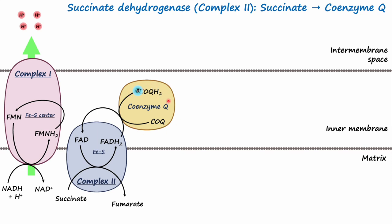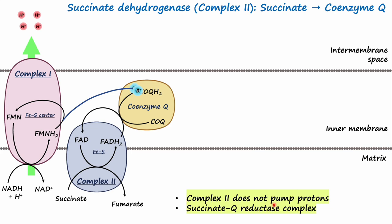Both Complex 1 and Complex 2 transfer their electrons to coenzyme Q, so coenzyme Q accepts electrons from both complexes. An important difference between them is that when electrons pass through Complex 2, the energy liberated is very small — not sufficient to cause a conformational change — so Complex 2 does not act as a proton pump and does not contribute to the transfer of protons across the inner mitochondrial membrane. Because it reduces coenzyme Q, it is also known as succinate-Q reductase complex.